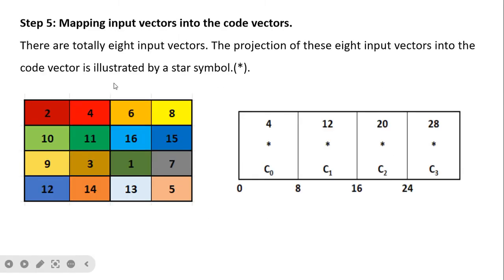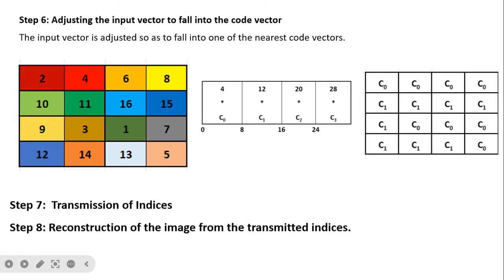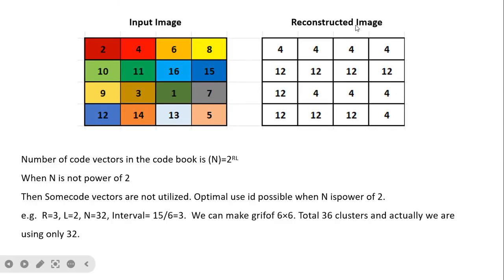The same steps of transmitting indices and reconstructing the image are performed. The reconstructed image shows quality degradation because the number of code vectors is small. This confirms that fewer code vectors lead to greater compression but more lossy output, regardless of whether using scalar or vector quantization.